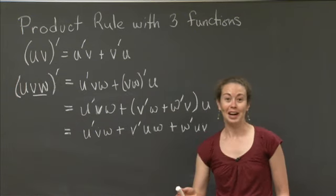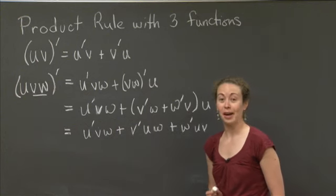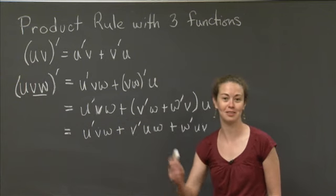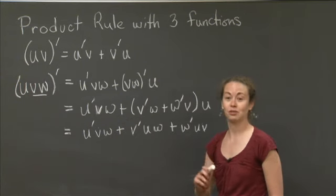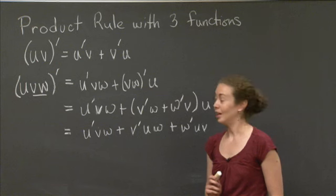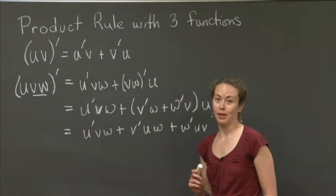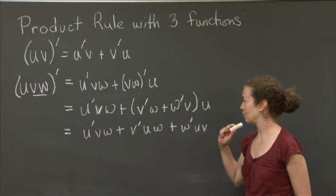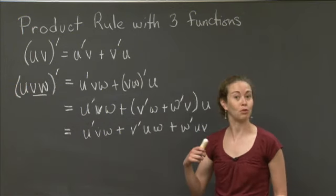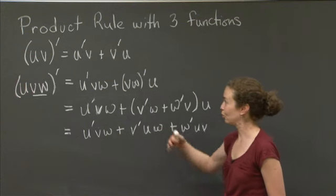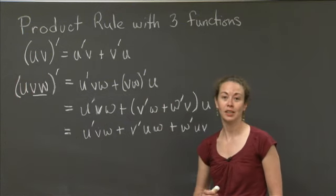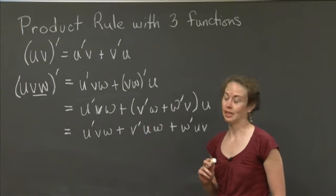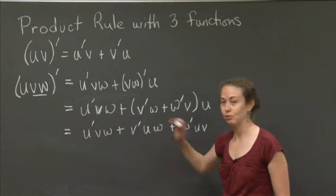I would imagine that at this point, you anticipate a pattern. So if I had a fourth function, if I did u times v times w times z, let's say, and I took that derivative with respect to x, you could probably anticipate you would have four terms when you added them up, and that fourth term would have to include a derivative of the fourth function. So from here, you can probably tell me what the derivative of the product of n functions is. And you could check it using the same kind of rule.